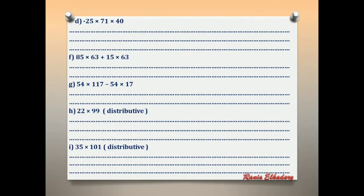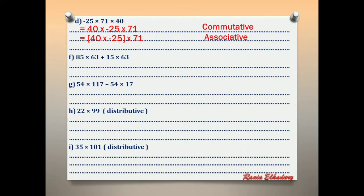Letter D: negative 25 × 71 × 40. Golden numbers: 25 × 40. Step 1 — commutative: rearrange. Step 2 — associative: put (40 × negative 25) in brackets = negative 1000. Then negative 1000 × 71 = negative 71,000. Belongs to Z — closure.